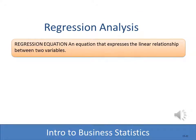We've determined there is a strong positive correlation between the number of sales calls a salesperson makes and the number of copiers they sell. Now we'd like to develop an equation that would allow us to predict — for example, if Joe makes 50 sales calls, how many copiers is he going to sell? That's where we come up with a regression equation, which we'll cover in the next few slides.